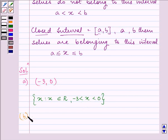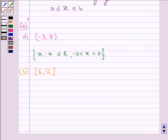In part B we have a closed interval and the elements are ranging from 6 to 12. So here we will be writing X such that X belongs to R and X is greater than equal to 6 but less than equal to 12. Now here 6 and 12 are included in this set. So here is the difference between an open interval and a closed interval.